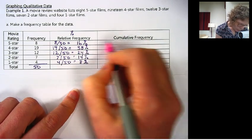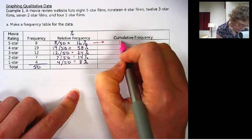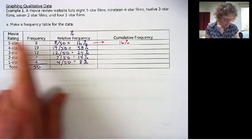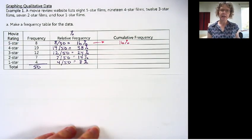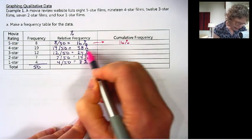we're going to start with 16%. We have 16% in the first category. And then each time we're going to add on.